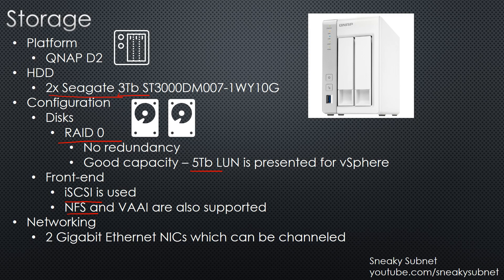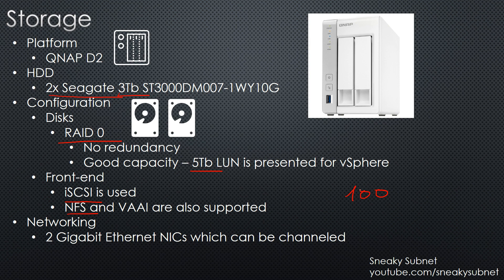The QNAP also has two gigabit Ethernet NICs which you can bond or aggregate. I'm not saying it's the best NAS appliance for a home lab — there are a lot of models on the market and you could spend days comparing them. You can pick whatever you want, just make sure it supports the required capacity, exposes the appropriate front-end protocols for vSphere, and has at least a 1 gigabit Ethernet NIC. With a regular Fast Ethernet NIC you can't get more than 12.5 megabytes read and write speed, which is really slow.